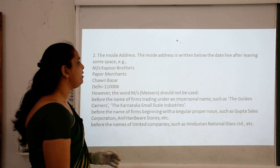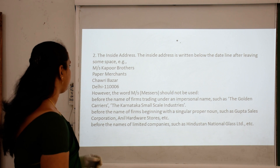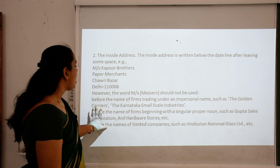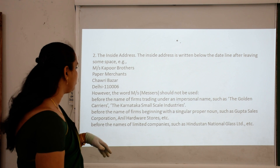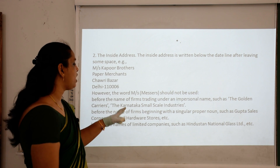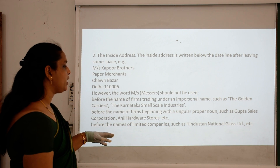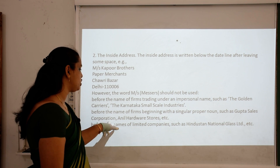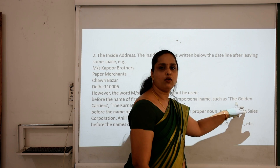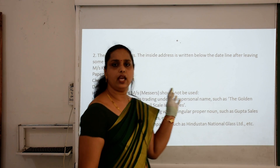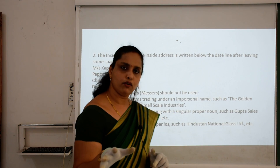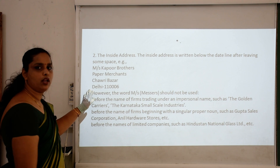Inside address: it is written below the date line after leaving some space. The word 'Messrs' should not be used before the name of a firm trading or impersonal name such as 'The Golden Carrier' or 'Karnataka Small-Scale Industry'. For firms beginning with a singular proper noun such as Gupta Sales Corporation or Anil Hardware, it also should be omitted. In the name 'The Golden Carrier', G and C should be capital letters.